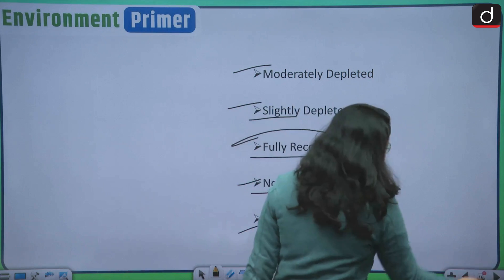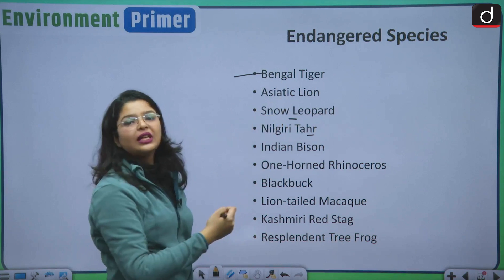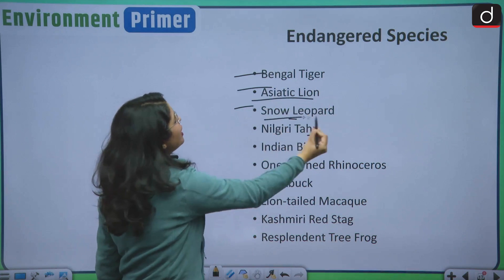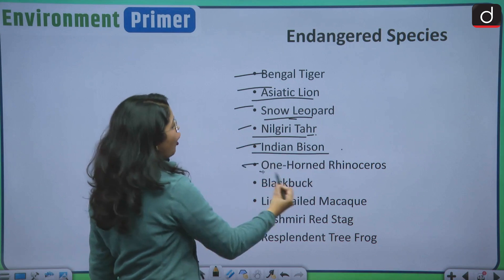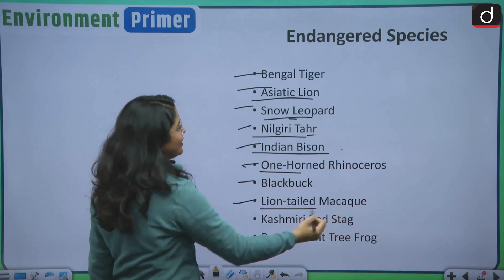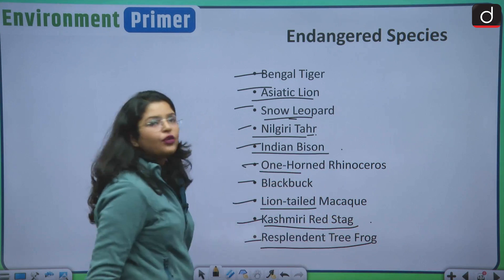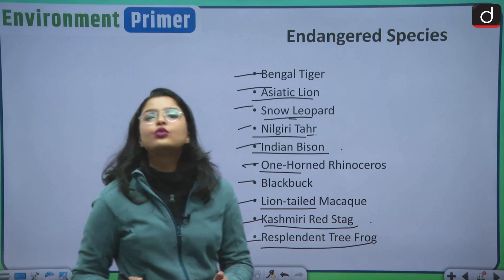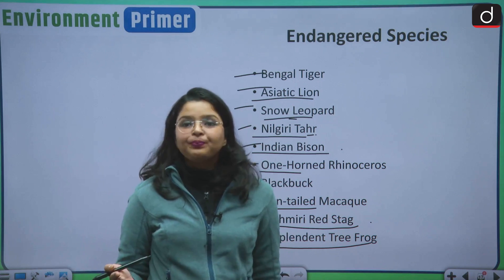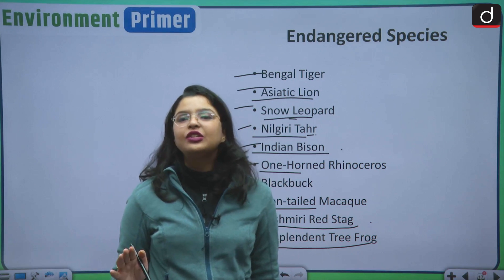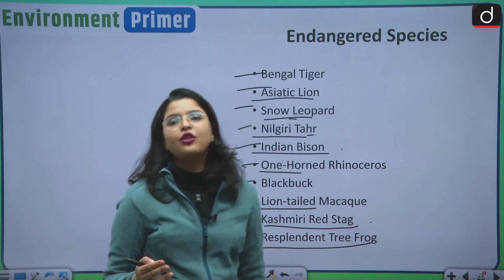Moving forward to the endangered species in India. The Bengal tiger, Royal Bengal tiger, the Asiatic lion, snow leopard, Nilgiri tahr, Indian bison, one-horned rhinoceros, black buck, lion-tailed macaque, kashmiri red stag and the resplendent tree frog. All of these species could sooner or later become completely extinct from India. That is why they are in the category of endangered species and we need to pay more attention to the preservation efforts of these species.